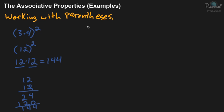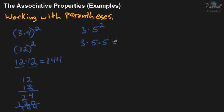Let's do another example working with parentheses. We'll do 3 times 5 squared — this one doesn't have parentheses. So we're going to focus on the exponent first before we multiply, because per order of operations you work with exponents before multiplication or division. We can rewrite this as 3 times 5 times 5. The exponent of 2 tells you that 5, the base, is multiplied by itself — two factors. So 5 times 5 is 25, and then times 3 is 75.